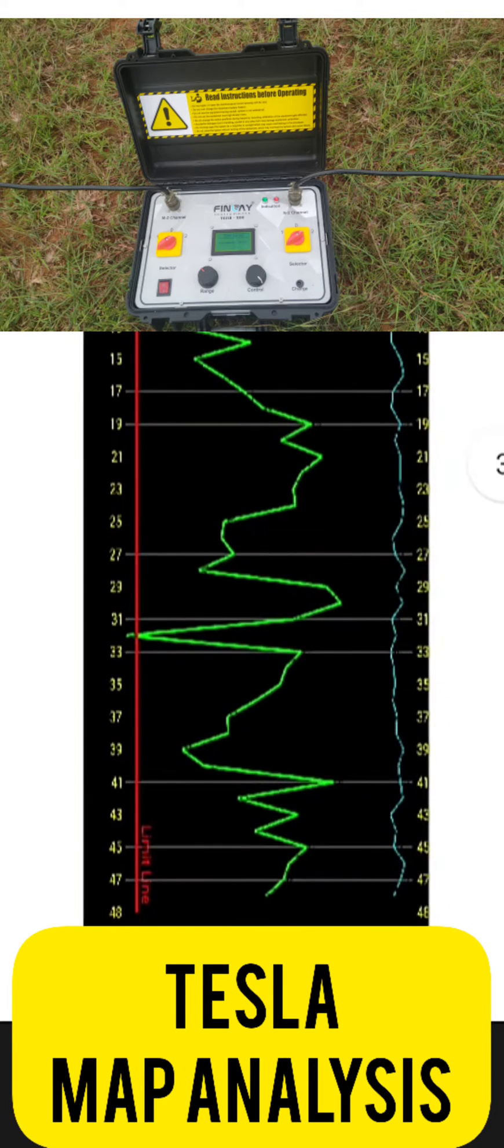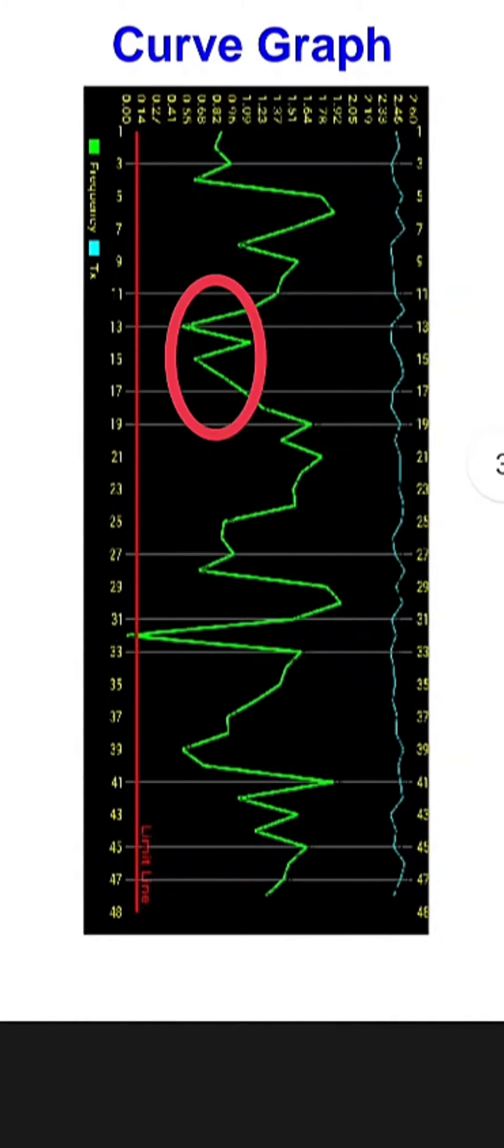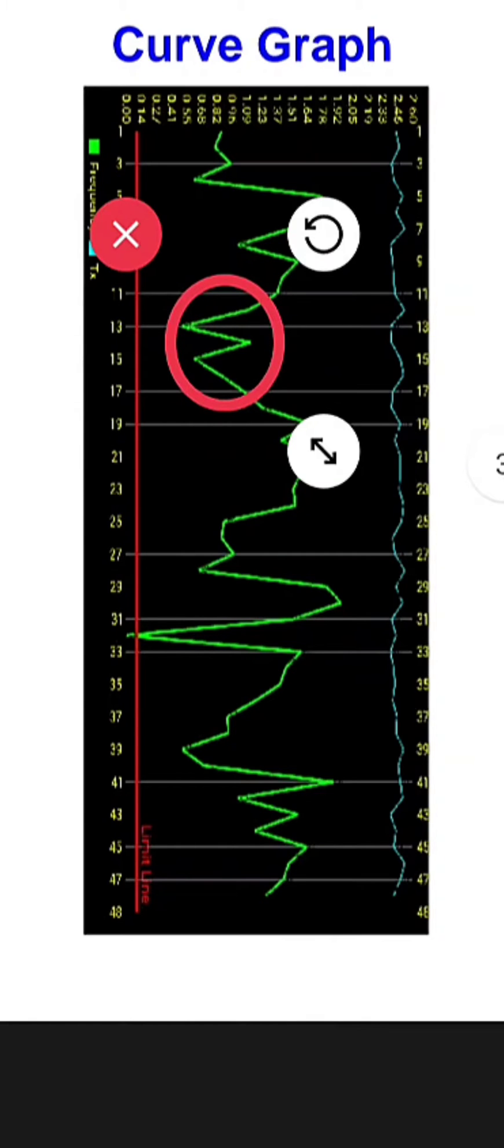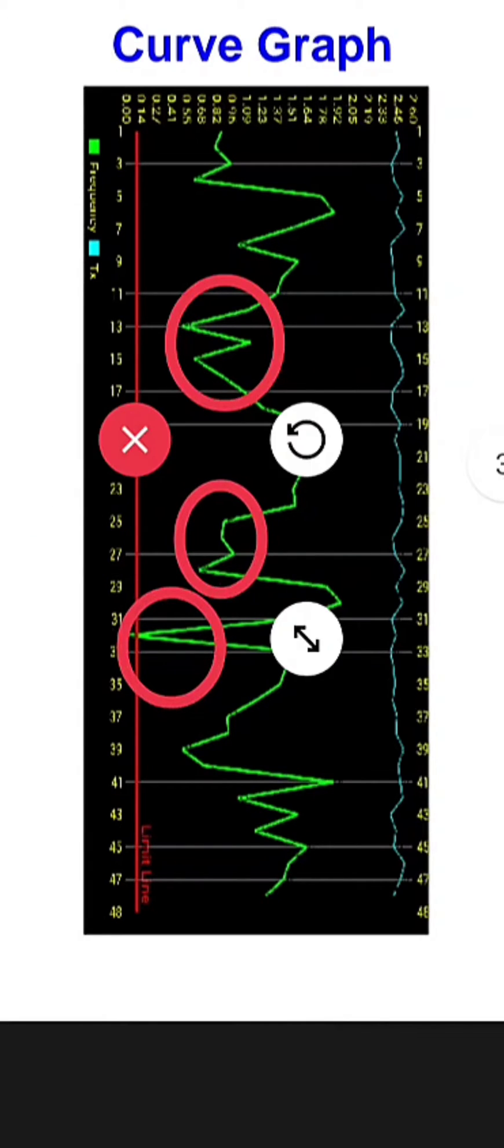Today we are going to discuss the Tesla groundwater detector map analysis. This is called the curve graph. Wherever I am marking, values have come down. That is the frequency differences. When the values come down, we prefer that area to be a fault zone. Here we can see we have marked three zones where the values have dropped from the transmitted value.